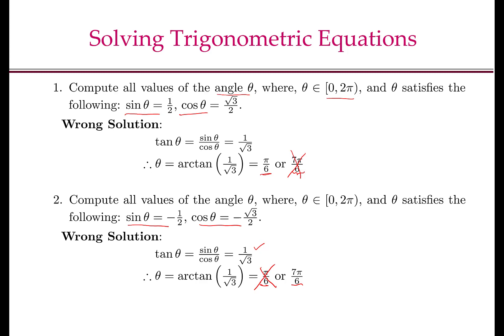So one has to be careful when solving these trigonometric equations. The correct way to do it is to use what is known as the atan2 function, which is a way of performing arc tan or tan inverse that is sensitive to the quadrant in which the point can lie.